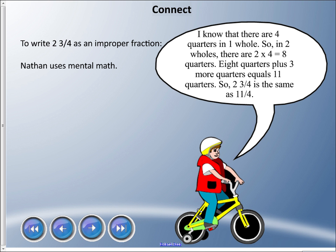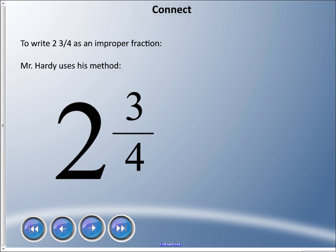Eight quarters plus three more quarters equals eleven quarters. So that means two and three quarters is the same as eleven quarters. We're getting that same answer quite a bit there.